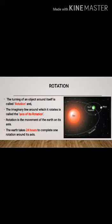The turning of an object around itself is called rotation and the imaginary line around which it rotates is called the axis of rotation. Rotation is the movement of the Earth on its axis. The Earth takes 24 hours to complete one rotation around its axis.